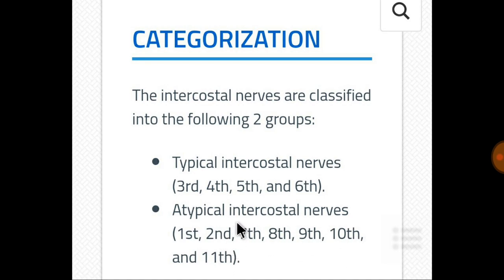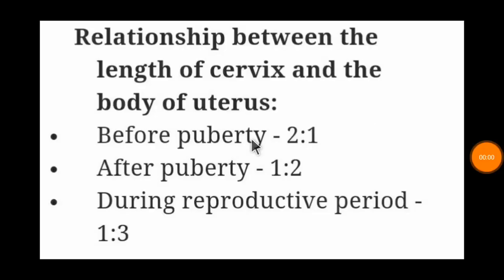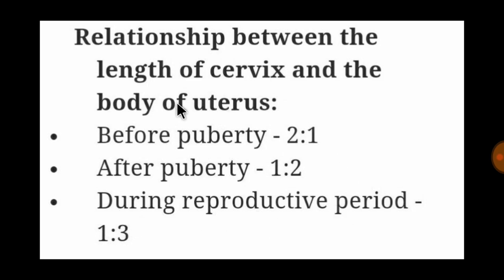Regarding the relationship between the length of the cervix and the body of the uterus — a frequently asked MCQ topic: before puberty the ratio is 2:1 (cervix to body), after puberty it is 1:2, and during the reproductive period it is 1:3. Common sense applies — during the reproductive period, the body of the uterus is much larger in size.